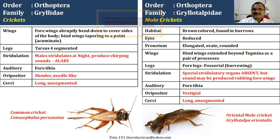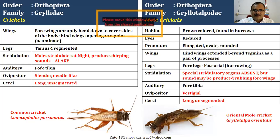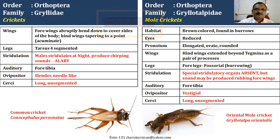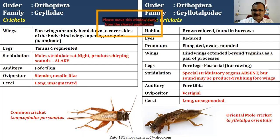The stridulation in crickets is at night — you hear the chirping sound. The crickets hide in cupboards and other places at home. The nymphs will not have wings; they have only wing pads. They have auditory organs in the foreleg tibia because of their allery-type stridulation. The tympanal organs are the sound-receiving organs in the foreleg tibia. The ovipositor is slender, long, and needle-like. The anal cerci are really long but unsegmented.